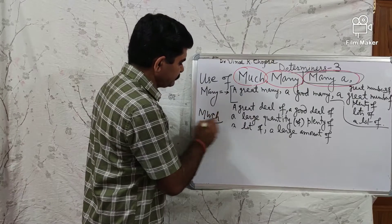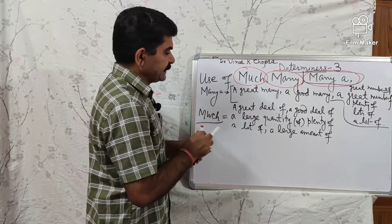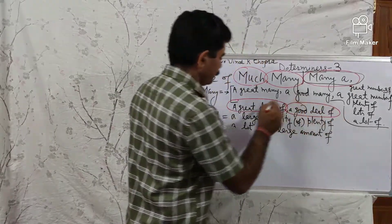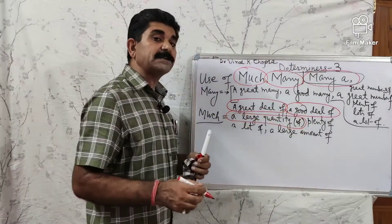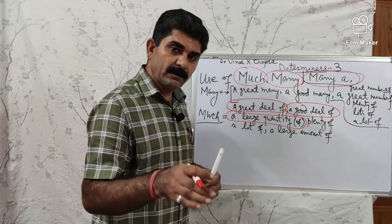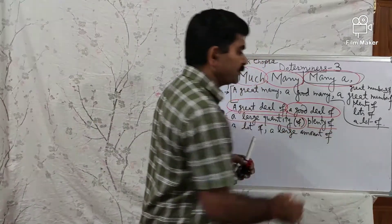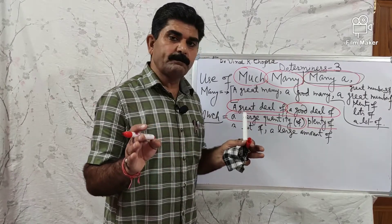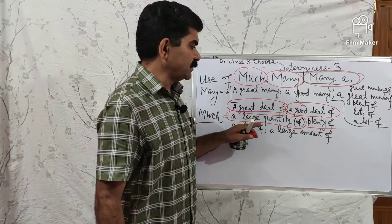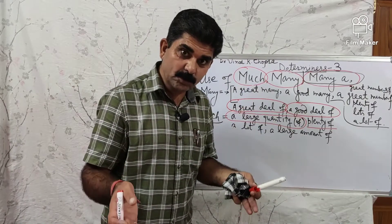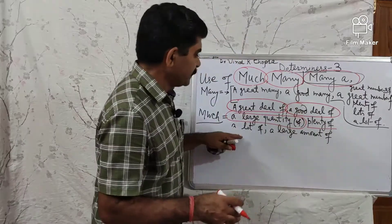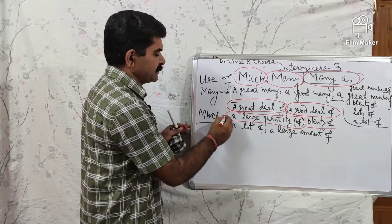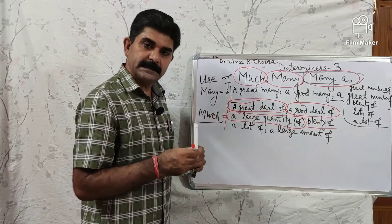In affirmative sentences, much is equal to: a great deal of, a good deal of, a large quantity of, plenty of, a lot of, a large amount of. For example: 'The farmers of India grow plenty of rice,' 'A large quantity of rice is grown in India,' 'A great deal of rice is grown in India,' 'A lot of rice is grown in India.' So much = these alternatives for affirmative sentences.